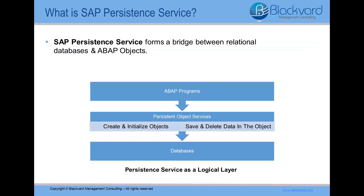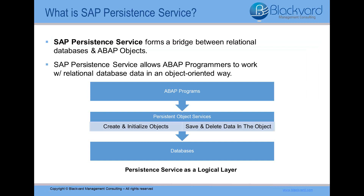If you're joining me here today, it is likely because you want to learn a little bit more about SAP Persistence Service. One of the simplest explanations of SAP Persistence is that it basically forms a bridge between your relational database and your ABAP objects. What is unique about the Persistence Service is that it lets ABAP programmers work with relational database data in an object-oriented way — kind of like working with the programming languages Java or C Sharp.